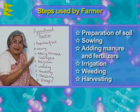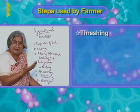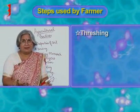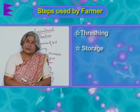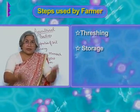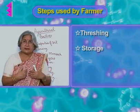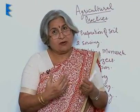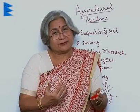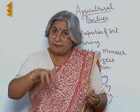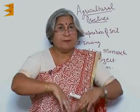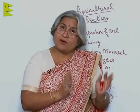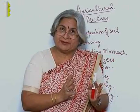He removes the grains from the plant — that is threshing. And finally, when grains are available, they have to be stored, because we cannot eat away everything straight away. We need wheat or rice throughout the year, not only in one part of our country but all parts of the country. So we have to store it — that is the storage.